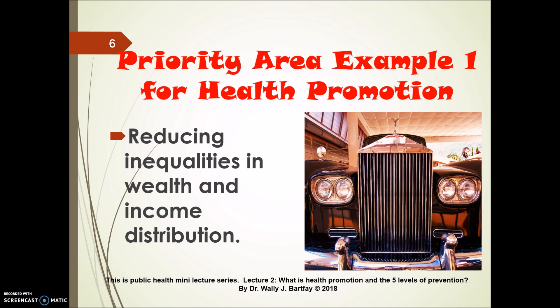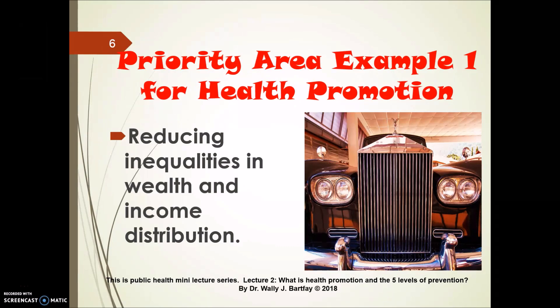There are three big priority areas identified by the Ottawa Charter. The first includes reducing inequalities in wealth and income distribution. Indeed, a substantial body of research has shown that individuals with lower social and economic status, or SES, have poor health outcomes, including increased morbidity and mortality measures in comparison to those with higher socioeconomic status.